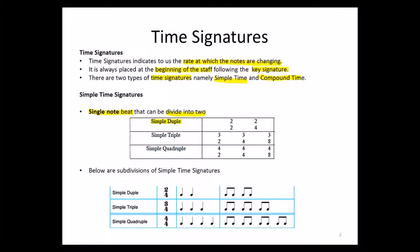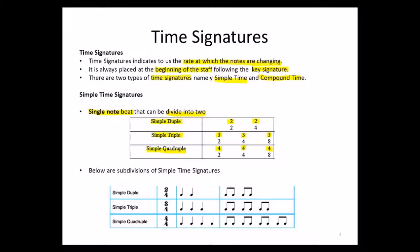We have what we call simple duple time, where duple means two — that means two beats in a bar. We have simple triple time, where triple means three beats in a bar. Then we have simple quadruple time, where quadruple means four beats in a bar. Below are the subdivisions of simple time signatures.